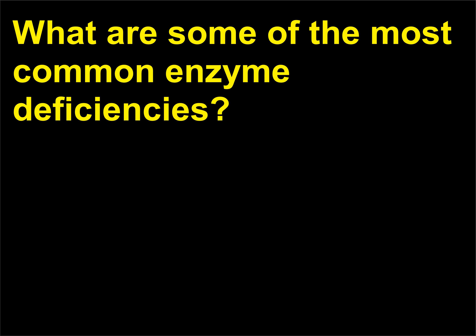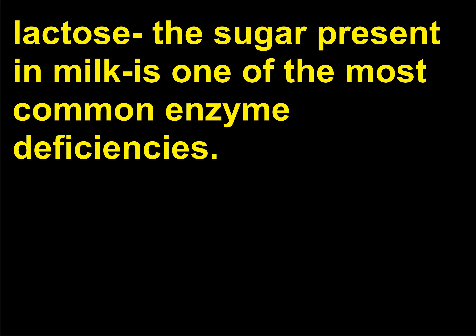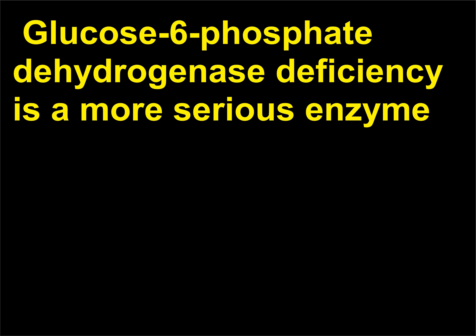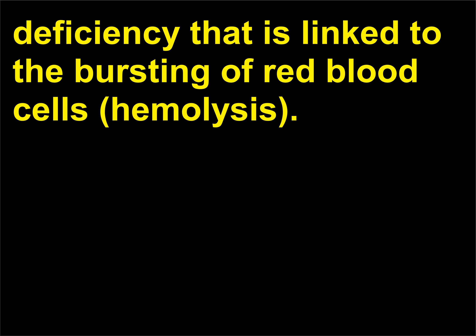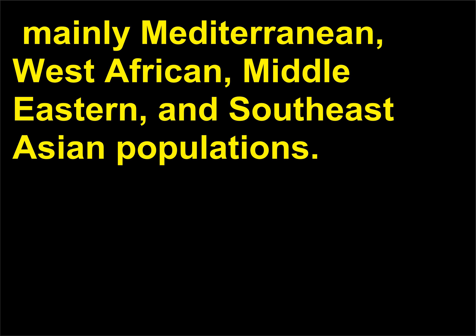What are some of the most common enzyme deficiencies? Lactose intolerance, a condition that results from the inability to digest lactose, the sugar present in milk, is one of the most common enzyme deficiencies. Glucose-6-phosphate dehydrogenase deficiency is a more serious enzyme deficiency that is linked to the bursting of red blood cells, hemolysis. This deficiency is found in more than 200 million people, mainly Mediterranean, West African, Middle Eastern, and Southeast Asian populations.